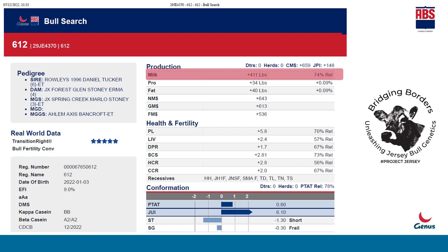In the production section, the milk potential of the Romeo bull is shown as plus 411 lbs. LBS stands for pound. In India we usually use either liters or kilograms. The fat is also presented in pounds. Today we will understand how to convert fat and milk potential from lbs to kilograms as per Indian standards.